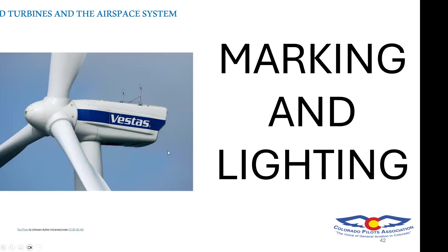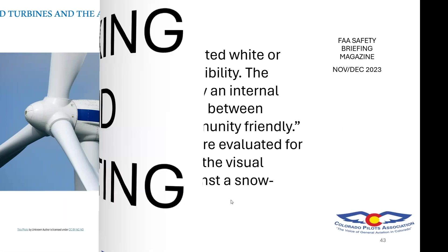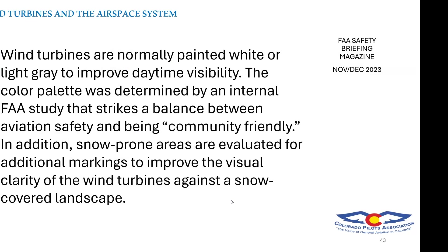Marking and lighting. Wind turbines are normally painted white or light gray to improve daytime visibility. The color palette was determined by an internal FAA study that balances aviation safety with being community friendly. In snow-prone areas, additional markings may be added — sometimes painting the middle or tips of the blades red — to improve visual contrast against a snow-covered landscape. Traveling through wind farms, it can be hard to tell if a turbine is gray or white, especially under cloud cover.